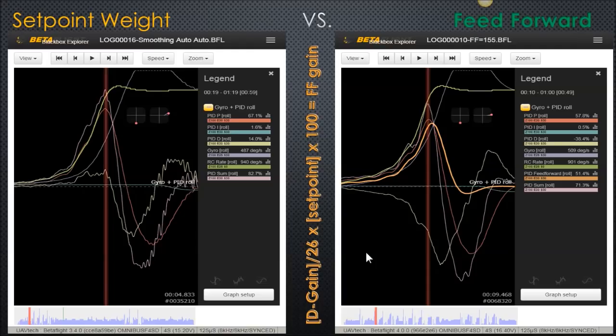Okay, so on the left and the right we have a simple roll, line of sight roll, with setpoint weight versus the same roll with feedforward. It's obviously two different flights, but with about the same roll rate. You can see the green line here is the commanded roll rate. So what we have on the graphs is P-term, I-term, D-term, gyro, the commanded roll rate, and then the PID sum is what's actually driving the quad to produce a roll.